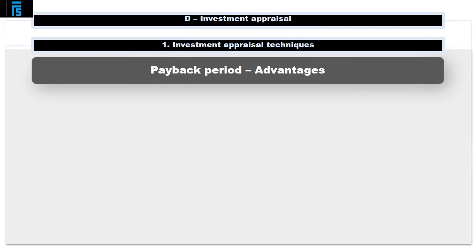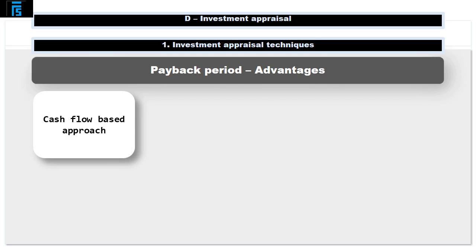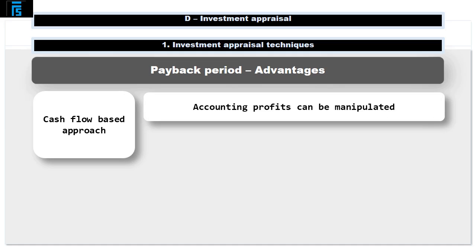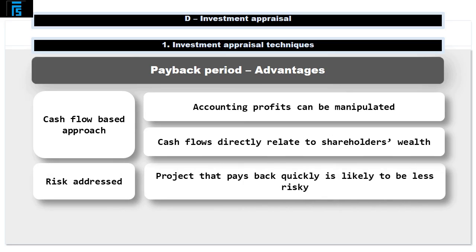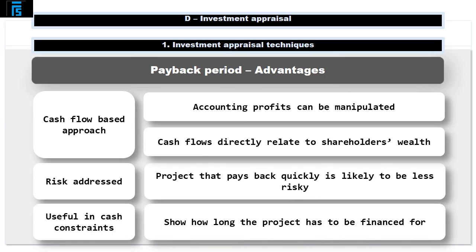The payback period has several advantages as an investment appraisal technique. It is cash flow based, as opposed to accounting rate of return, which is based on accounting profits. Accounting profits can be manipulated, and cash flow more directly relates to the fundamental objective of maximising shareholder wealth. It also gives the decision maker a feel for how risky the project is. A project that pays back quickly is likely to be less risky, as the near future is simply more knowable than the distant future. Payback period is also useful if the company is facing cash flow difficulties, as it shows how long the project has to be financed for.